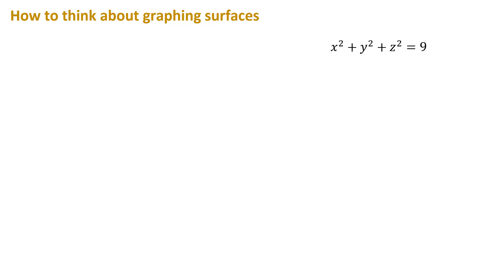I have an equation here that you might recognize as the equation of a sphere. A sphere isn't hard to graph, but I want to use this easy example to think about how you might approach a more difficult equation. First, I recommend that you don't try to memorize a bunch of different forms for equations. Instead, I recommend starting by thinking about graphing what are called the traces.